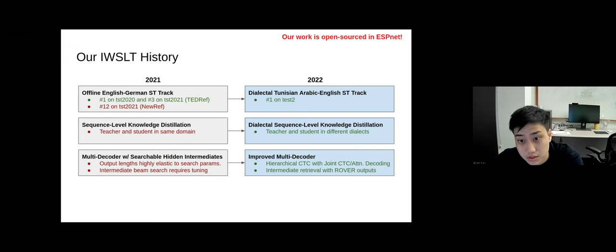This year, we've improved the multi-decoder by adding a hierarchical CTC with joint CTC attention decoding architectures, and we've also introduced a way to skip the intermediate beam search and instead do an intermediate retrieval over discrete rover outputs.